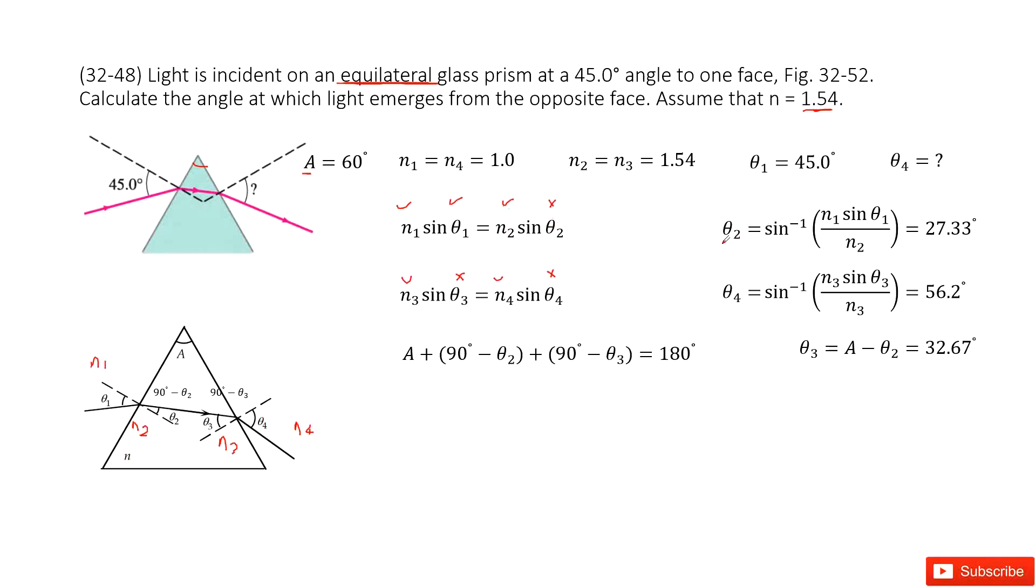Converting this equation, we get θ2 out of there. So now this one becomes given. Now it looks like we need to get the relationship between θ2 and θ3, and then we can solve for θ4, right? How can we do that?